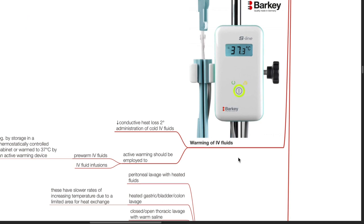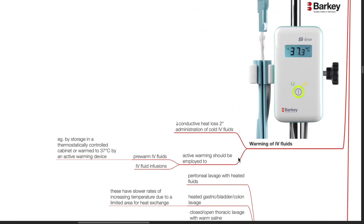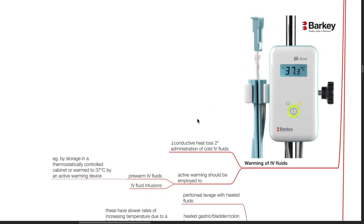Warming of IV fluids: this reduces conductive heat loss secondary to administration of cold IV fluids. Active warming should be employed to pre-warm IV fluids, for example by storage in a thermostatically controlled cabinet, or warmed to 37 degrees Celsius by an active warming device or by IV fluid infusion warmers.